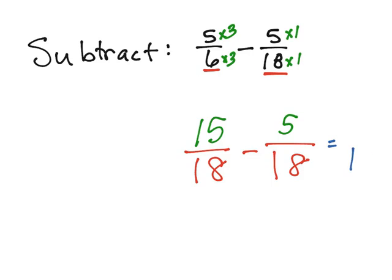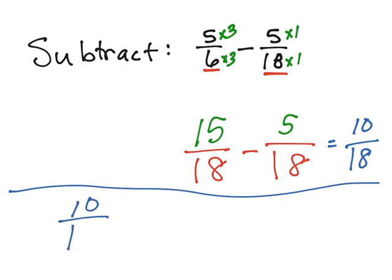So when I subtract, my denominator stays the same. And 15 minus 5 is 10. Hopefully, you say, well, 10 and 18, those are both even. They're reducible by 2. And you'd be right.